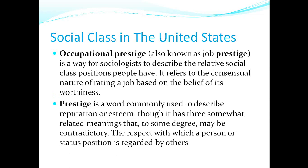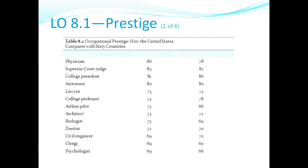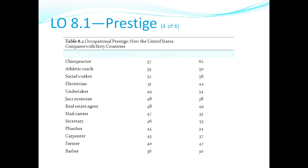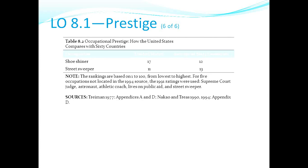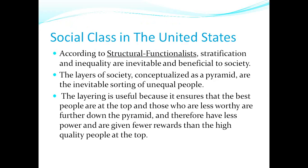Prestige and occupational prestige refers to your job prestige. The most prestigious jobs across an average of 60 countries include doctors, Supreme Court judges, the president, lawyers, architects, and professors. This particular slide with the country rankings won't be on the exam, but the definitions of prestige and occupational prestige will be.